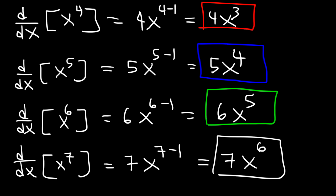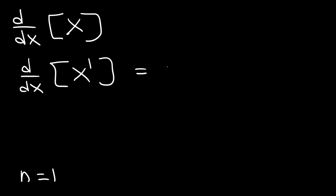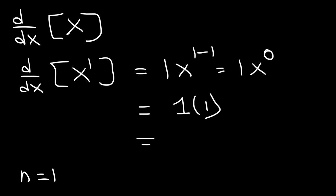That's how you can use the power rule to differentiate monomials. Now, what is the derivative of x? Keep in mind that x is x raised to the first power, so n is equal to 1. This gives us 1x to the 1 minus 1. Since 1 minus 1 is 0, and anything raised to the 0 power is 1, we get 1 times 1, which is simply 1. So the derivative of x is 1.